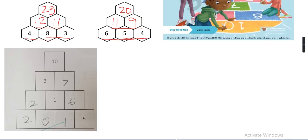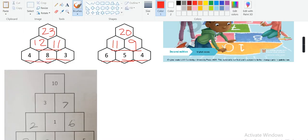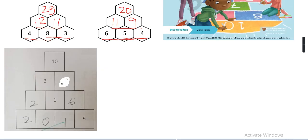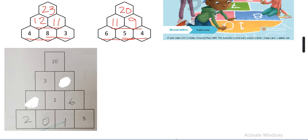Now we will do one wall from the book. These numbers were missing — let me erase them. I took the picture from my daughter's book; she already solved it, so I'm removing her answers. These three numbers are missing, and this one as well. Let's do these now.